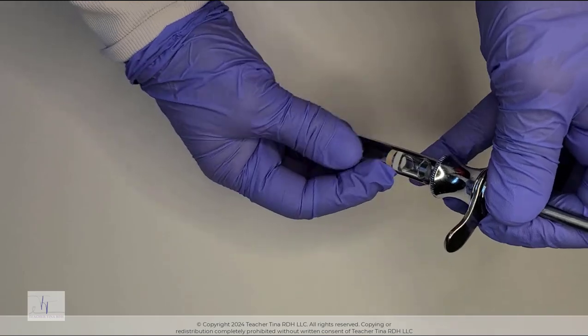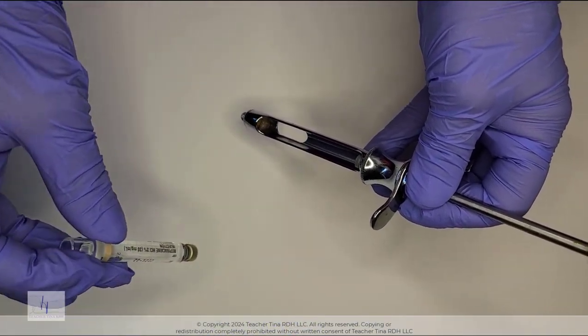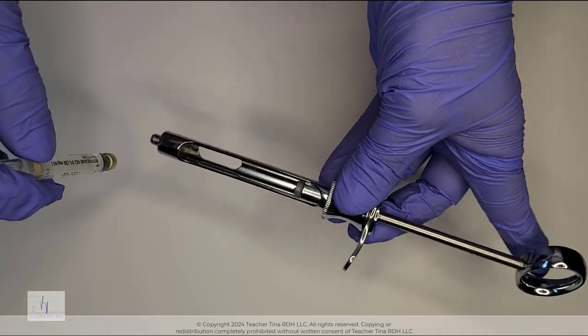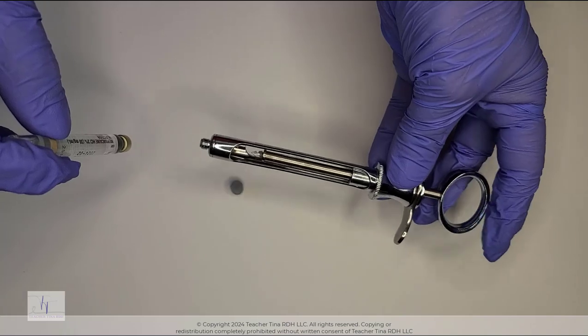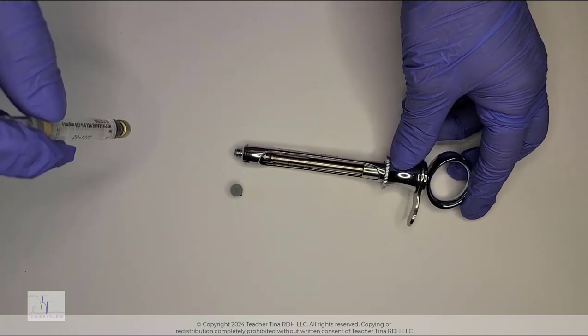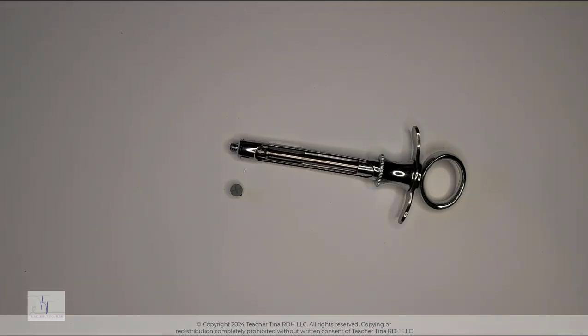Once the piston's been pulled out, you can gently lay the cartridge out of the syringe. There could be times when that rubber stopper is still engaged in the harpoon. It may fall off, or cotton pliers or locking forceps could help gently remove that.